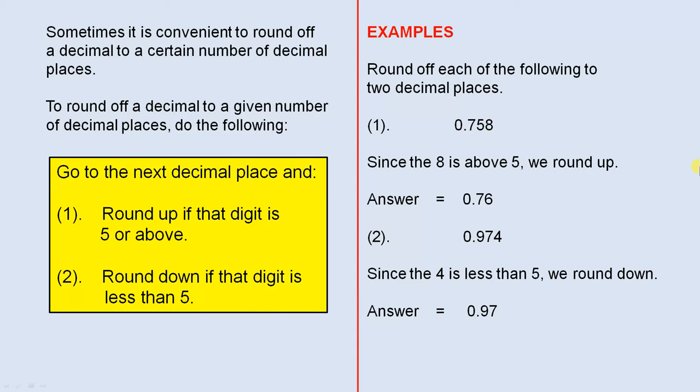Go to the next decimal place and round up if that digit is 5 or above. Number 2: round down if that digit is less than 5.